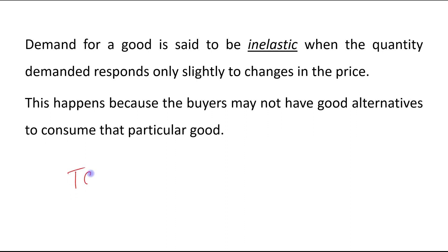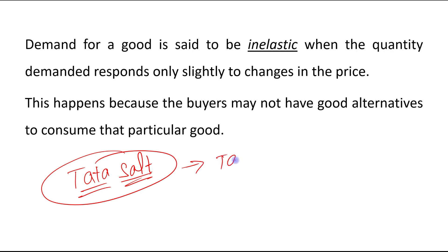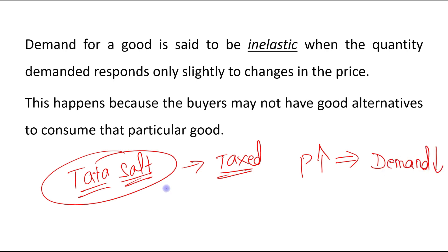Suppose that there is a good — Tata Salt. Suppose this good is taxed. When a good is taxed, price paid by the buyers increases, and this increase in price will lead to a decrease in demand. So the demand for Tata Salt will decrease. But there will be only a slight decrease in its demand because the buyers are not having good alternatives — there are not various alternatives of salt. That is the reason demand will decrease but not by a substantial amount, and in this case we say that the demand for a good is inelastic.